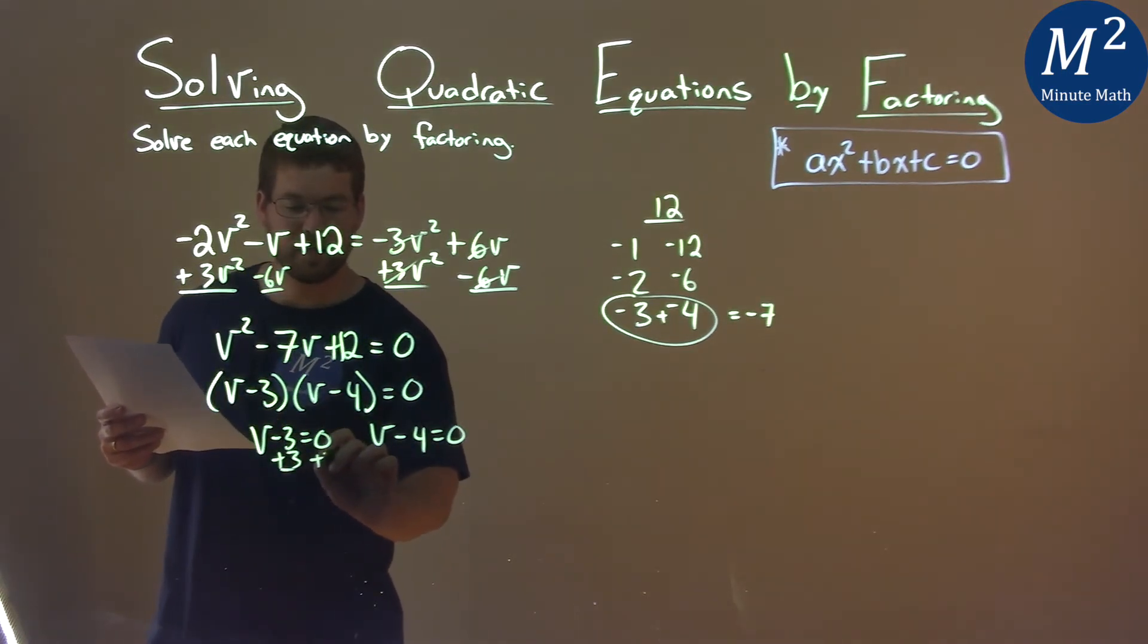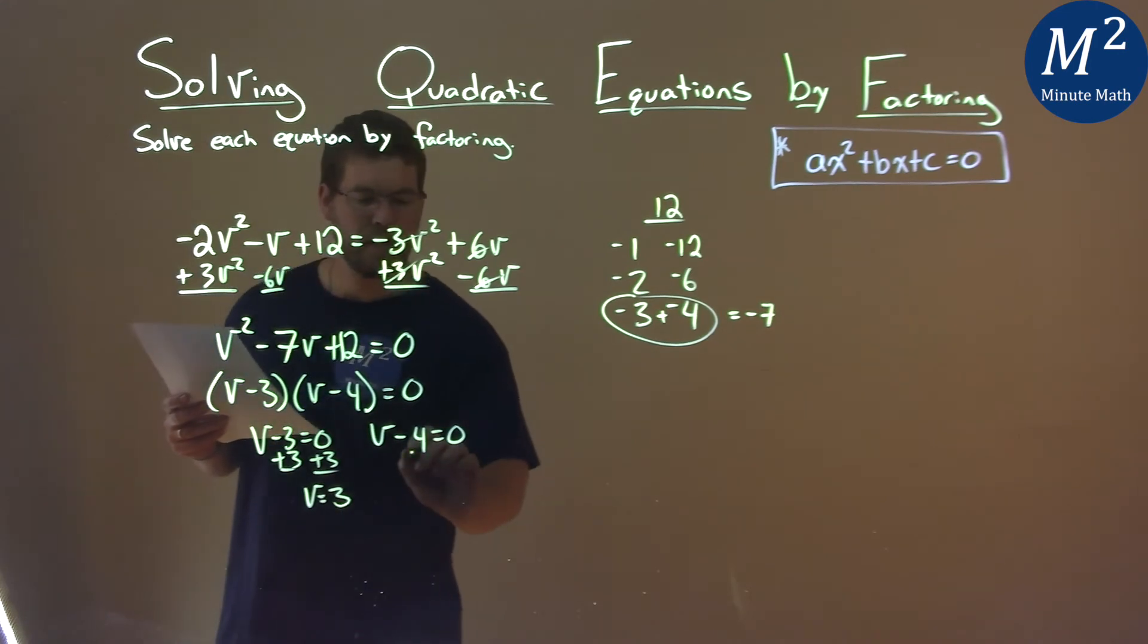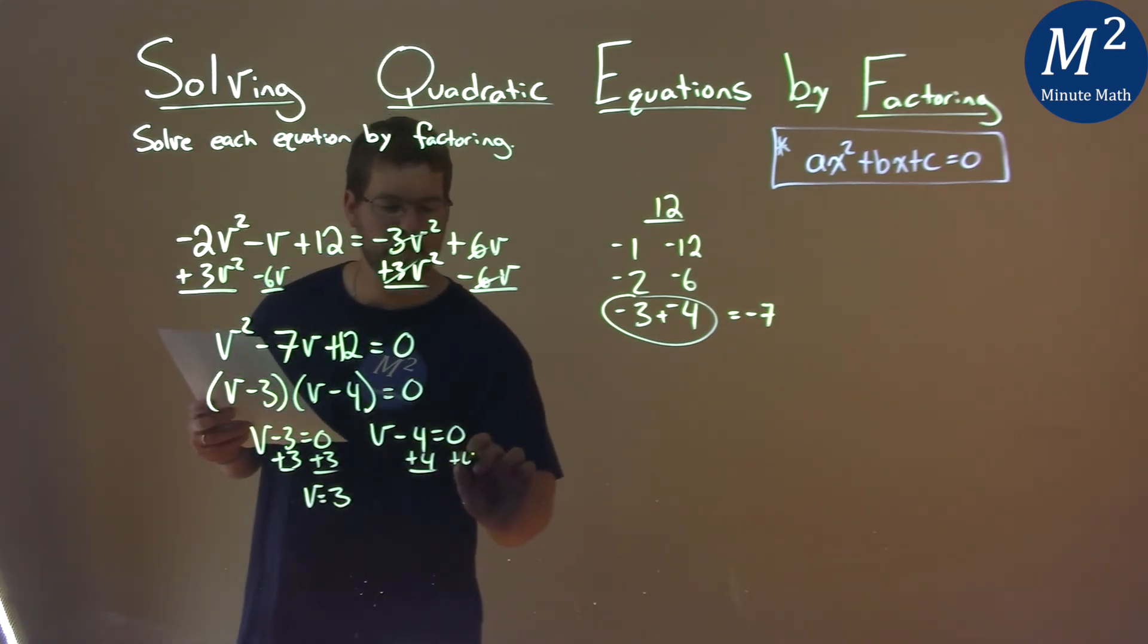Add 3 to both sides, v = 3. Add 4 to both sides, and v = 4.